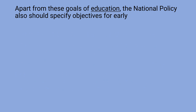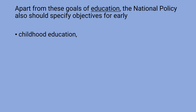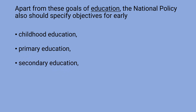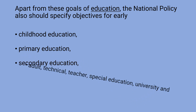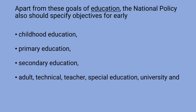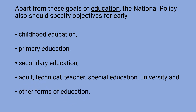Apart from these goals of education, the national policy should also specify objectives for early childhood education, primary education, secondary education, adult, technical, teacher, special education, university and other forms of education.